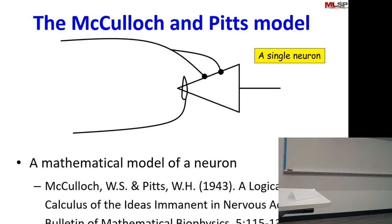McCulloch took him in and they worked on the perceptron. This was called the first mathematical model of the neuron — it wasn't called a perceptron back then. It's described in this lovely paper by McCulloch and Pitts. Pitts was only 20 years old when he wrote the paper. Almost 80 years later, I still can't understand the paper — very few people can because he invented his own math to make the descriptions.